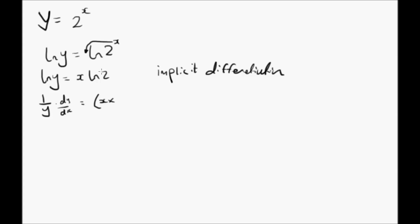The derivative of ln 2 is a constant, so it's 0, plus the second term multiplied by the derivative of the first term. The derivative of this term here is just simply 1. So 1 over y dy/dx is equal to ln 2.